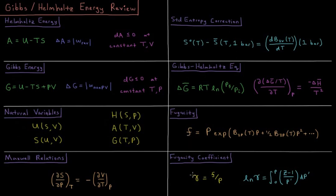We can define a quantity called the fugacity coefficient which is the ratio of the fugacity and the pressure of a gas, where we can calculate that from an integral if we know the compressibility factor PV bar over RT as a function of pressure up to the given pressure that we have.